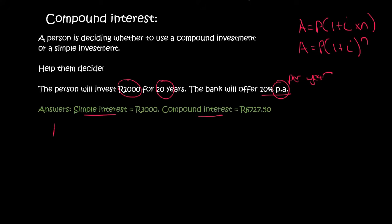For simple interest we know that the formula is like this. Now P is your starting amount which is the 1000 rand. I is your percentage which is 10 percent so I'll say 10 over 100 and the number of years is 20. If you go type that in you would end up with 3000 rand.